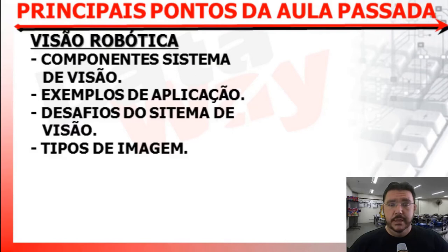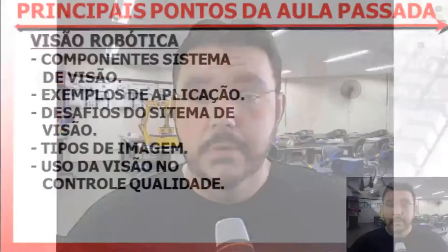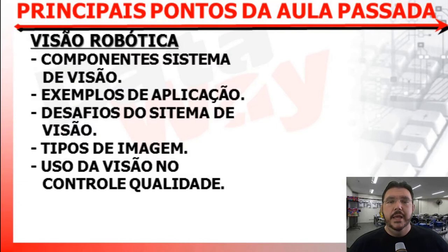Nós vimos o uso da visão no controle de qualidade, que talvez seja a maior aplicação da visão robótica. Você utiliza a visão para fazer um comparativo de uma peça a ser analisada com um padrão armazenado em um banco de dados. Através da visão robótica, você capta a informação da peça atual e compara com o banco de dados para ver se está correta. Se está correto, passa para a etapa seguinte; se não, aciona o mecanismo para retirá-la da linha de produção.